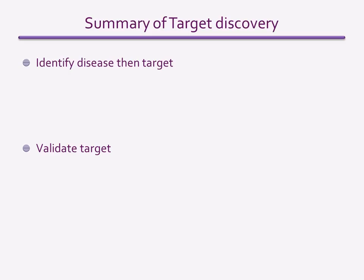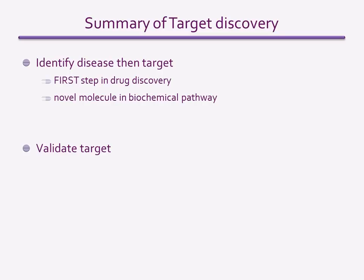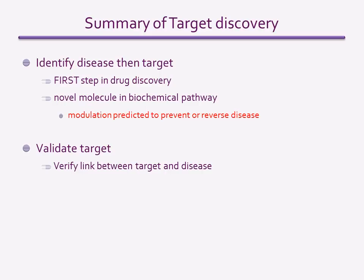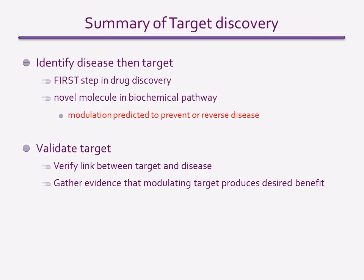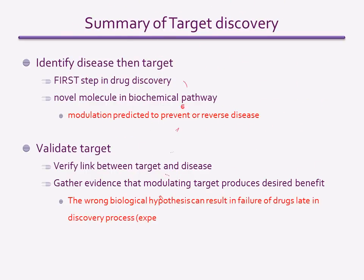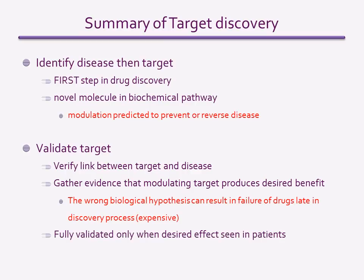The final slide summarises the target discovery step of drug discovery. It is the first step and aims to identify a novel molecule in a biochemical pathway which, when modulated appropriately, is predicted to prevent or alleviate disease. Once identified, a target must be validated — this means verifying the link between the target and the disease and gathering evidence that modulating the target has the predicted effect. Target validation is very important because getting it wrong at such an early stage can result in failure of drugs later in the process and can be very costly. However, no matter how thoroughly the target is validated, it is never 100% validated until the desired effect is seen in human patients.